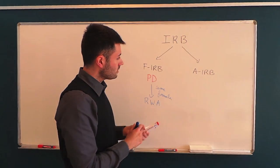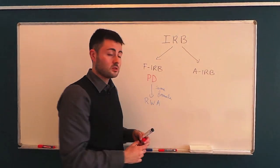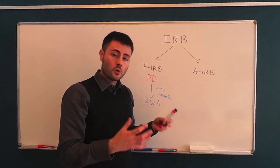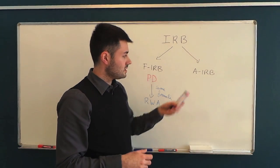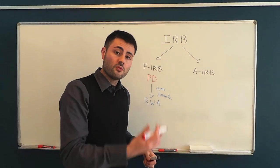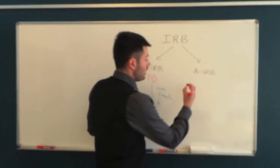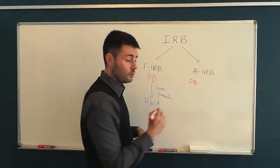For what concerns the advanced internal rating based approach, this is the approach in which banks have the largest freedom. In this approach, banks compute different quantities. The PD, the probability of default.